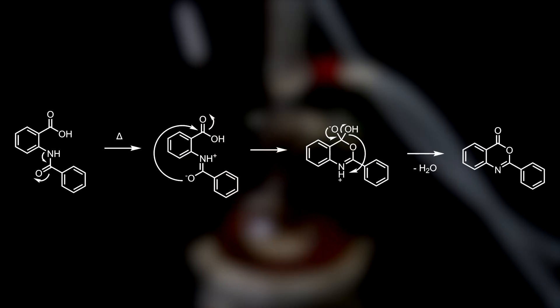How it proceeds is first through formation of the imidic acid, of which the oxygen can attack the carboxylic acid, forming this cyclic intermediate. Water is quickly eliminated by reforming the carbonyl double bond and protonation of the hydroxyl, which is then kicked off. In the end, giving this benzo-1,3-oxazine-4-one.